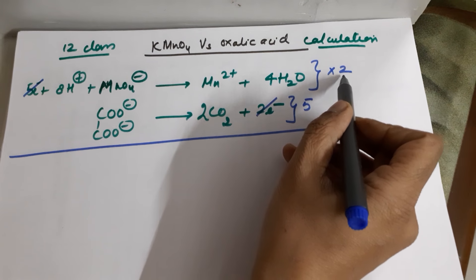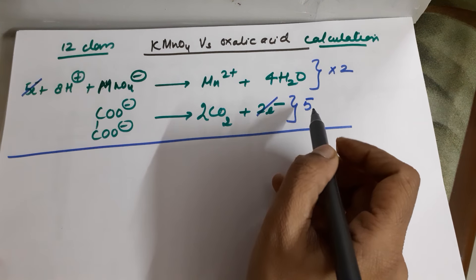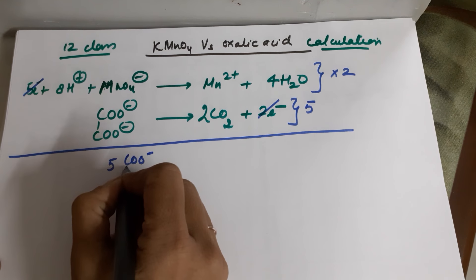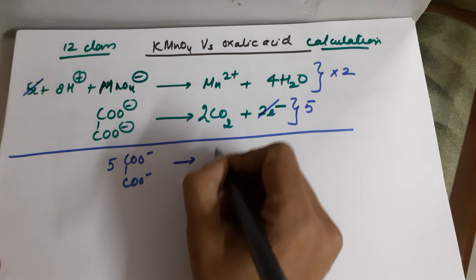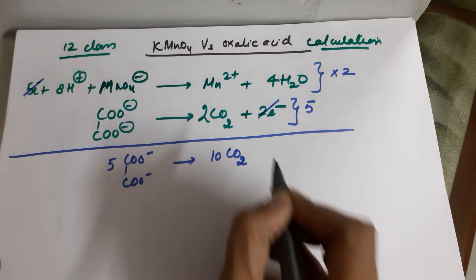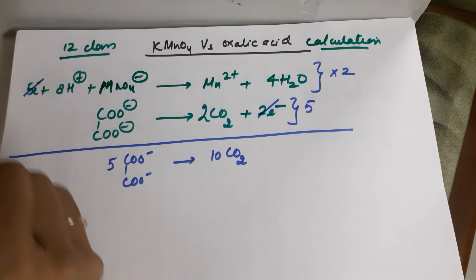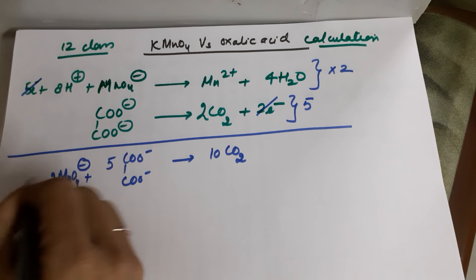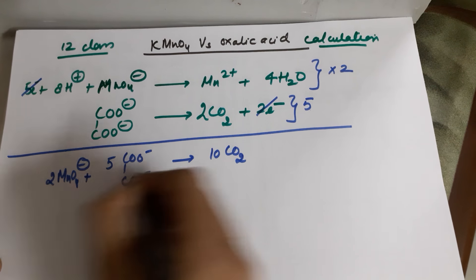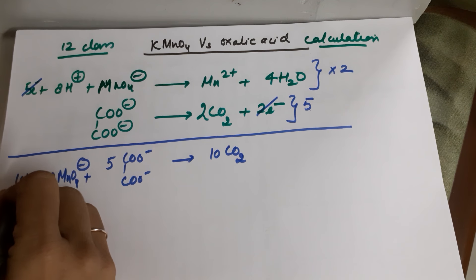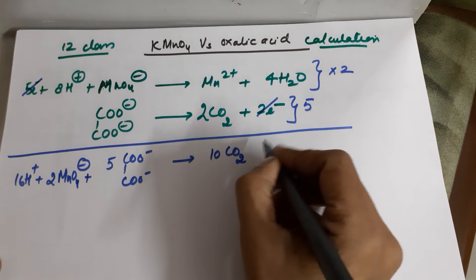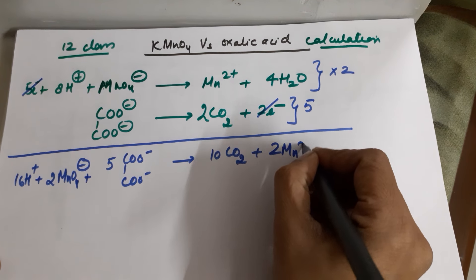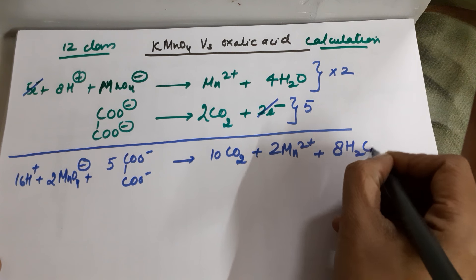You multiply the oxalate equation by 2 to make the electrons 10, then multiply the KMnO4 equation by 5 to also make the electrons 10. Once done, your electrons will be cancelled. So I have 5 times oxalate giving 10 CO2 molecules. Multiplying the KMnO4 equation by 2: 2 KMnO4⁻, 16H⁺, 2 Mn²⁺, and 8 water molecules.